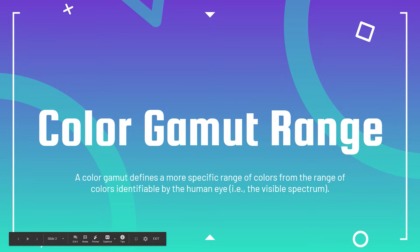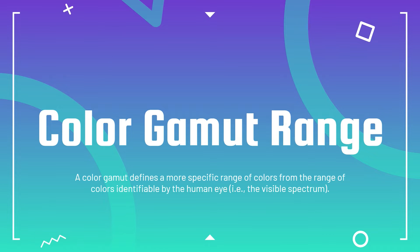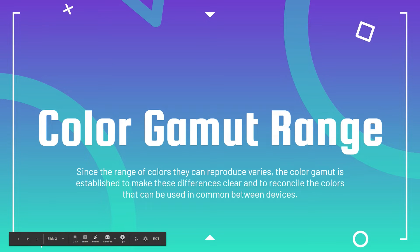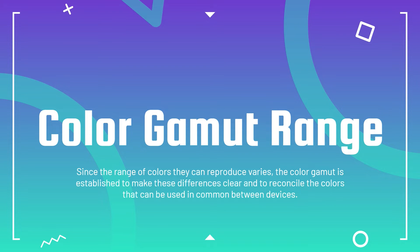First and foremost, color gamut range. A color gamut defines a more specific range of colors from the range of colors identifiable by the human eye — for example the visible spectrum. Since the range of colors that screens or monitors can reproduce varies, the color gamut is established to make these differences clear and to reconcile the colors that can be used in common between devices.